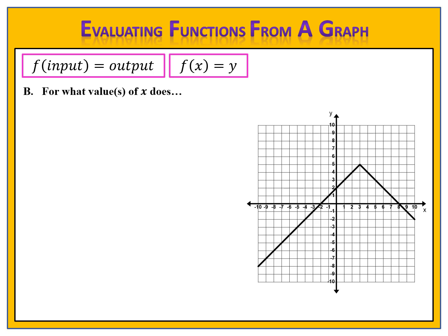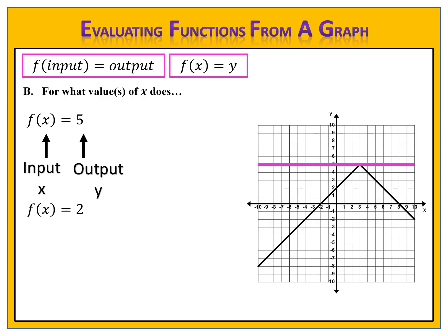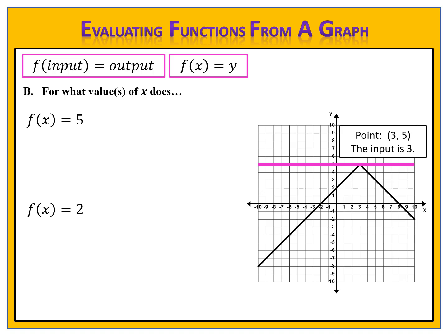Next, let's answer a different type of question. For what value or values of x does f of x equal 5, and does f of x equal 2? Note that the 's' in parentheses after 'value' means there might be one value or multiple values. For f of x equals 5: f of input equals output — the output is 5 and we need to find the input. We draw a horizontal line across the graph and find the intersection at the point (3, 5). The input is 3, so f of 3 equals 5, which means x equals 3.